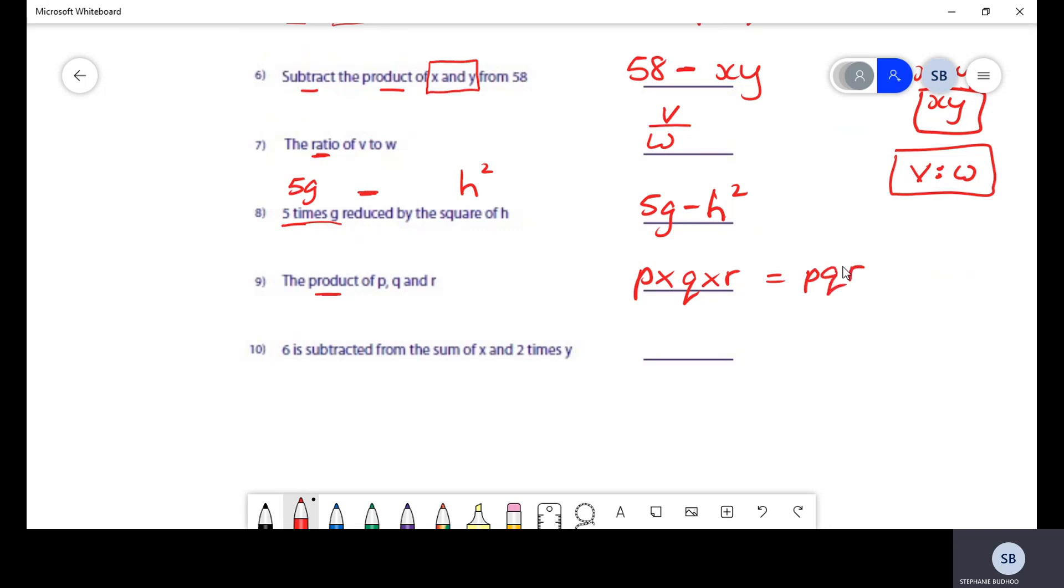And our last question, they're saying 6 is being subtracted from - from means that whatever is written after the word is larger. So 6 is subtracted from, therefore we are going to subtract 6 from something that's way bigger. And what is it? Subtracted from the sum of x, so that's x plus the sum of x and 2 times y. 2 times y can be written as 2y. So in brackets, because we have a huge operation being taken place between x and 2y, we are going to make sure to contain that in brackets. And they are saying at the end of the day you are going to have to subtract 6 from this.